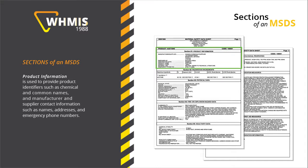The Product Information section is used to provide product identifiers such as chemical and common names, and manufacturer and supplier contact information such as names, addresses, and emergency phone numbers.